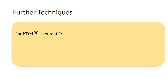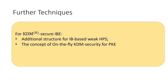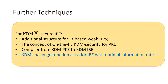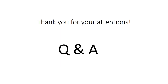Finally, we consider how to generalize our above result to the IBE setting. In order to do this, we roughly adopt the following four steps. First, introduce a decent structure for IBE-based weak HPS. Second, introduce the new concept of on-the-fly KDM security for PKE. Third, introduce a new compiler from KDM PKE to KDM IBE. Fourth, set a particular KDM challenge function class for IBE such that the information rate is optimal. The detailed construction can also be found in our paper. Thank you for your attention.